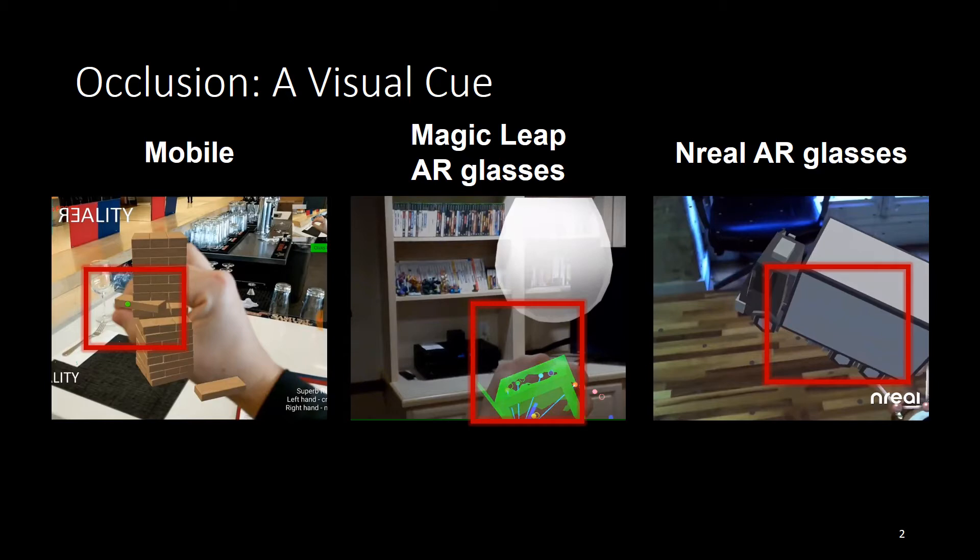We take the left video as an example. See the user remove the wooden block from the block tower. All virtual wooden blocks are rendered above user's hand, which makes the result very unrealistic.